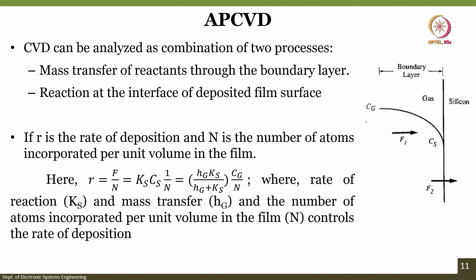CVD can be analyzed as a combination of two processes: mass transfer of reactants through the boundary layer, given by Hg, and reaction at the interface of the deposited film surface. If R is the rate of deposition and N is the number of atoms incorporated per unit volume in the film, then R = (Hg × Ks) / (Hg + Ks) × Cg / N, where Ks is the rate of reaction and Hg is the mass transfer coefficient.